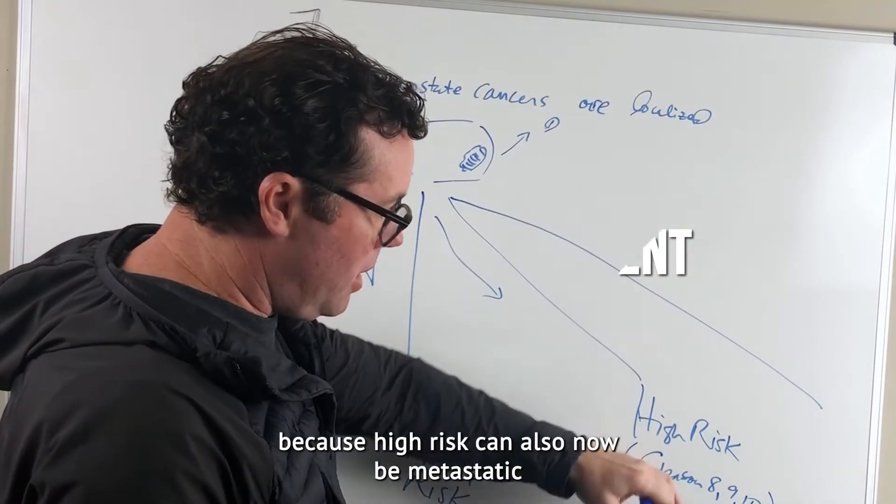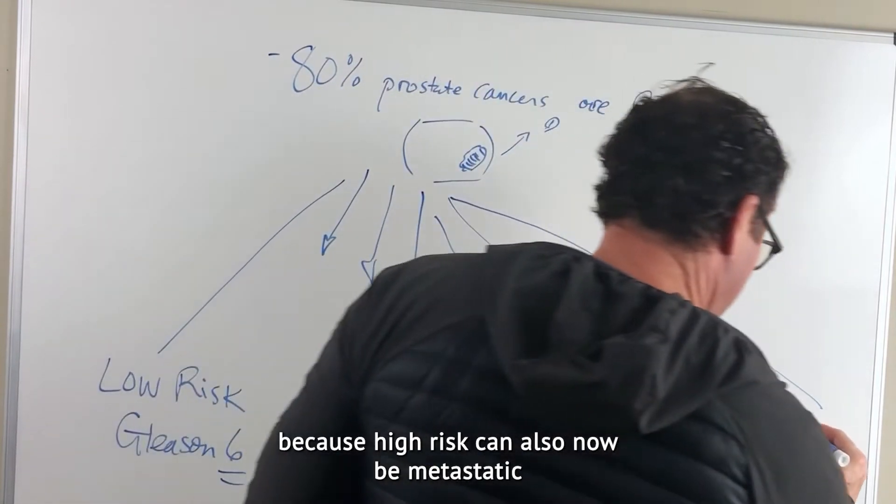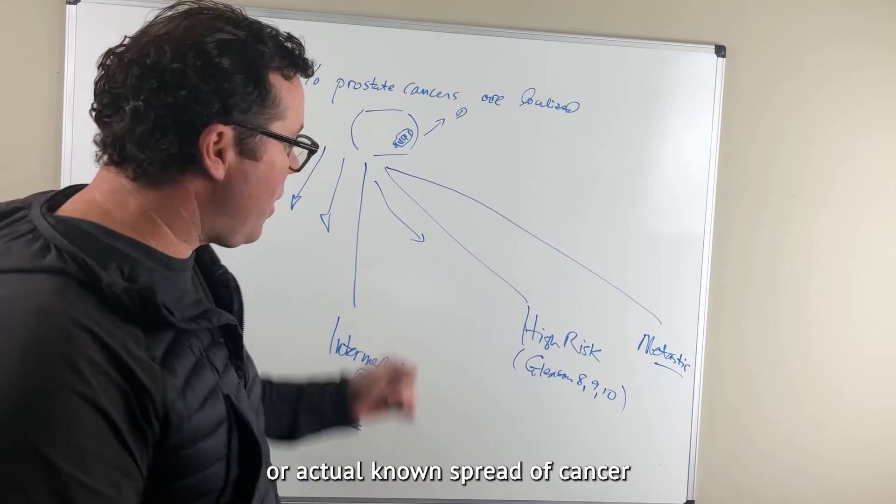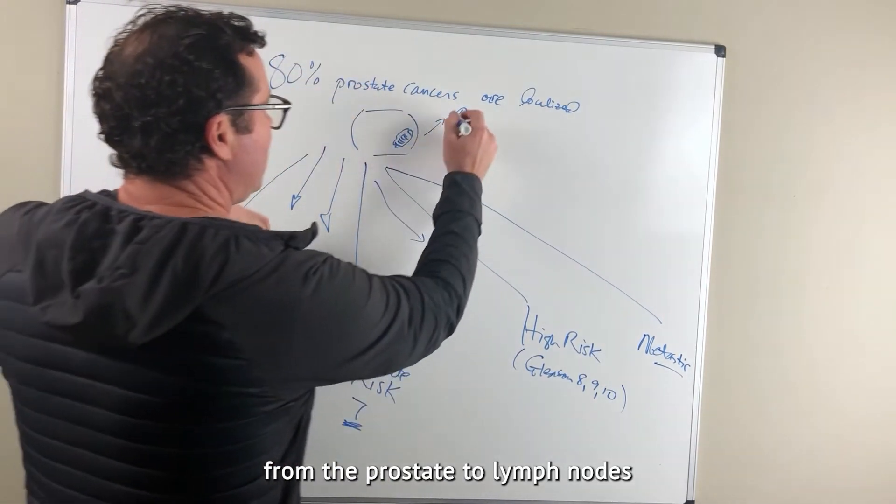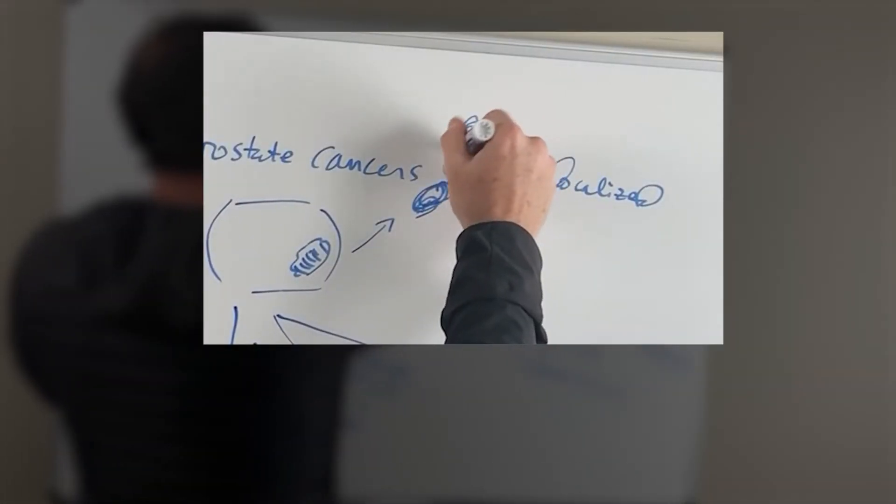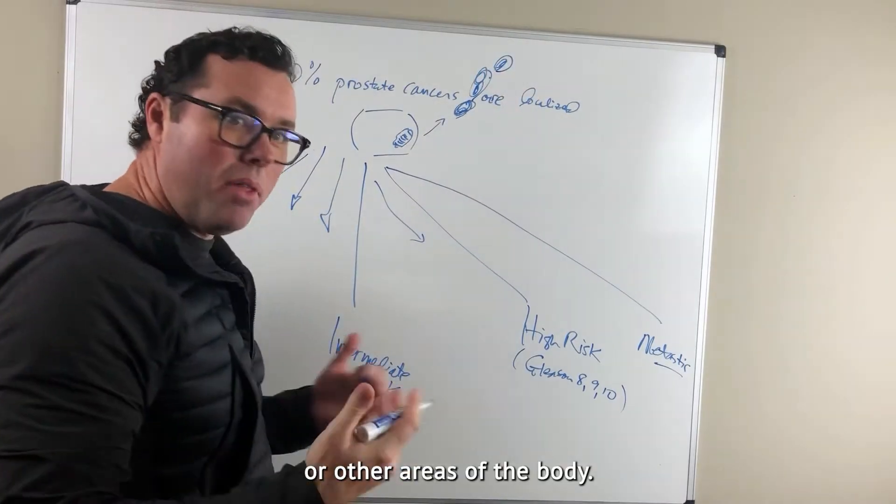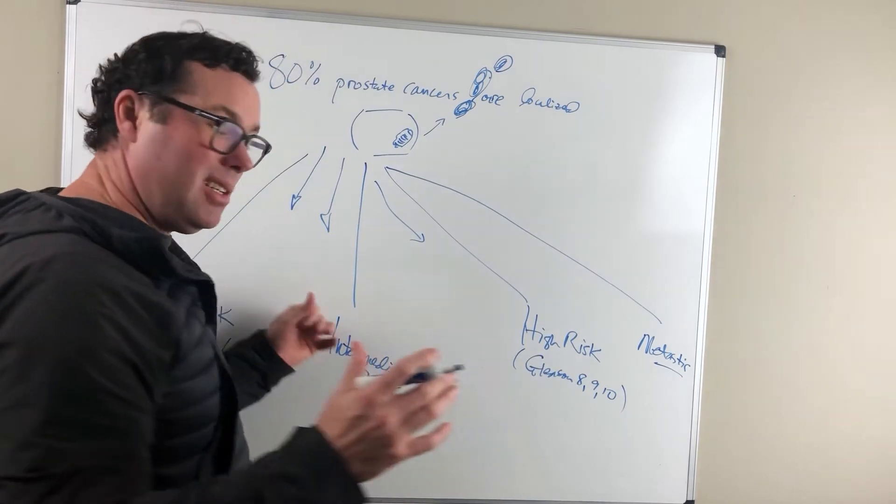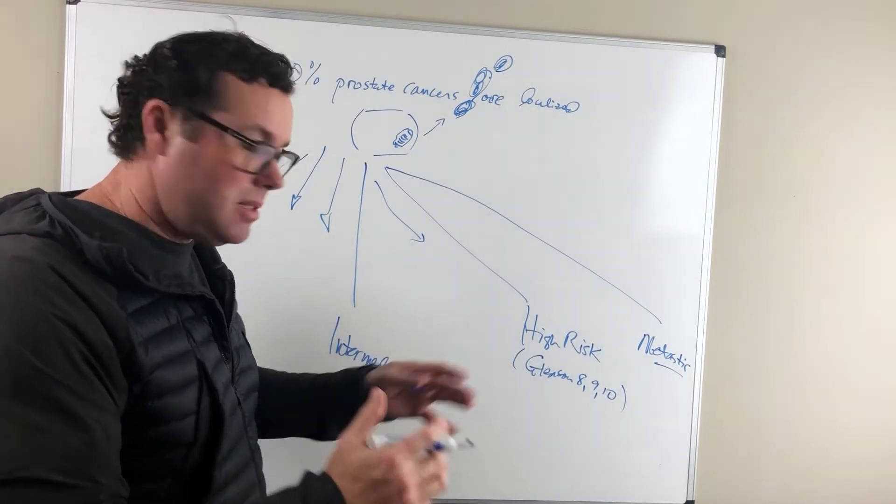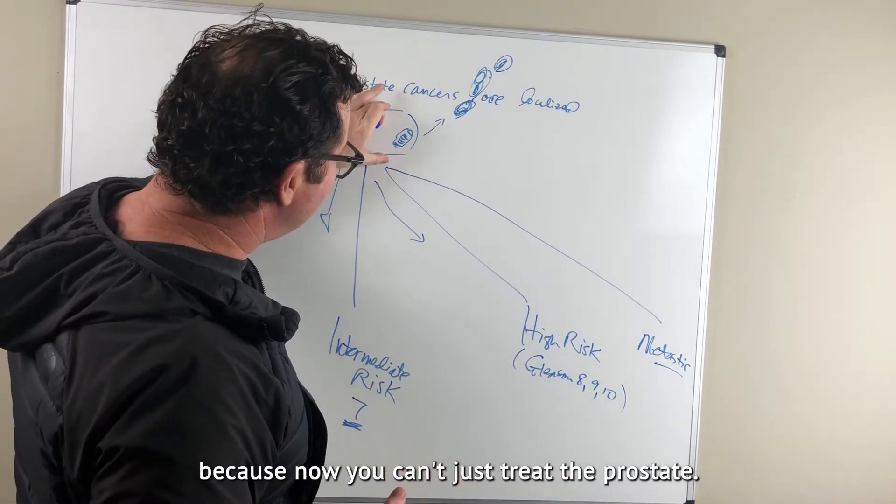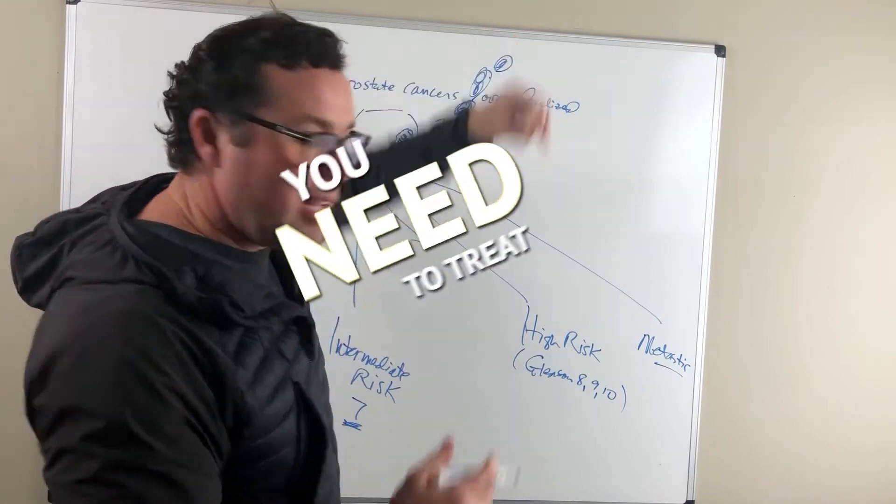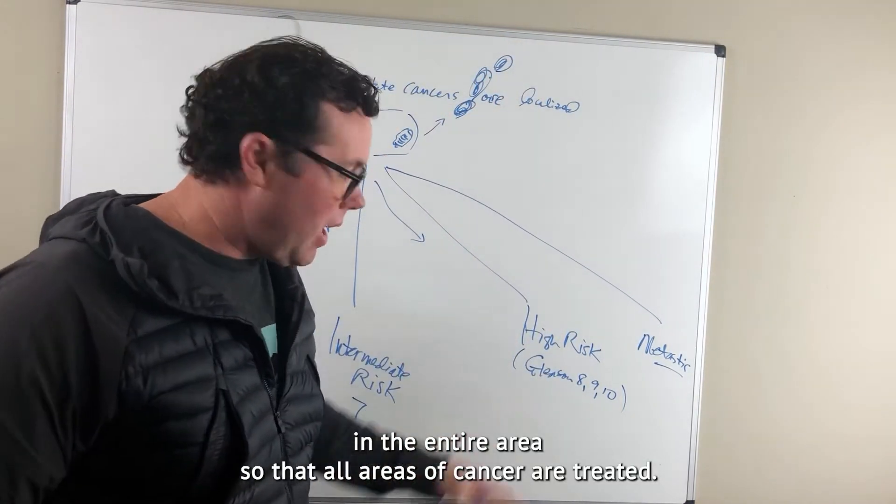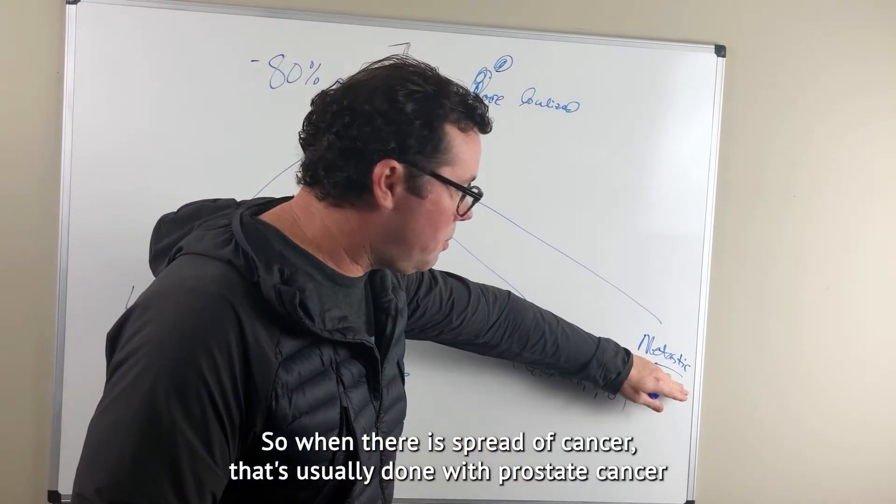The chart even expands greater because high risk can also now be metastatic or actual known spread of cancer from the prostate to lymph nodes or other areas of the body. When there's metastatic disease, typically system-wide treatment is needed because now you can't just treat the prostate. You need to treat the entire body so that all areas of cancer are treated.